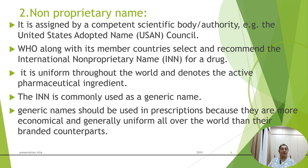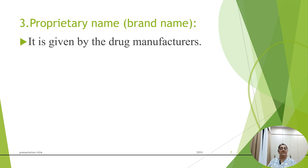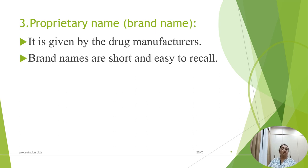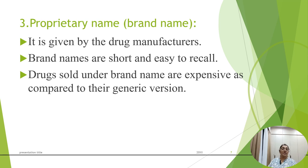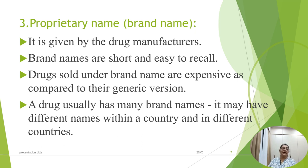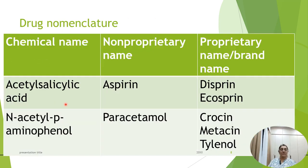Generic names should be used in prescriptions because they are more economical and generally uniform all over the world compared to their branded counterparts. The proprietary name or brand name is given by the drug manufacturer. Brand names are short and easy to recall, but drugs sold under brand names are more expensive than their generic versions. A drug may have many brand names, which can differ within a country as well as across countries. For example, aspirin's chemical name is acetylsalicylic acid, aspirin is the generic name, and Ecosprin and Dispirin are brand names. Similarly, acetyl p-aminophenol is the chemical name of paracetamol, paracetamol is the generic name, and Crocin and Metacin are brand names.